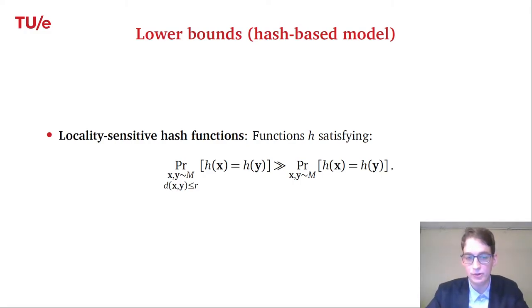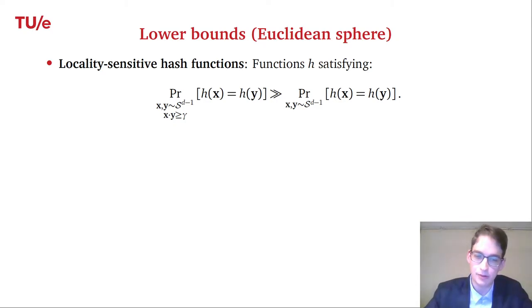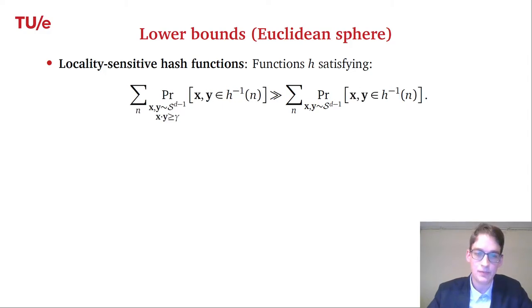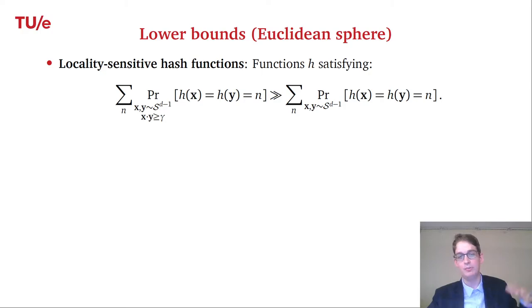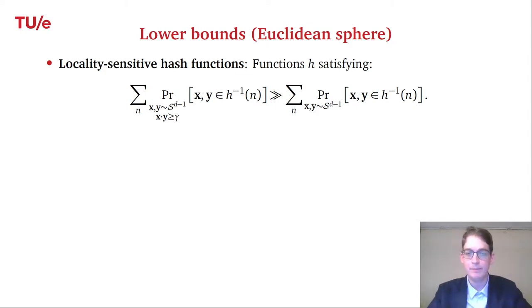Ideally we want hash functions where the gap between the collision probability for nearby vectors and for random vectors is as large as possible. On the unit sphere, closeness of two vectors x and y can be interpreted as their dot product being larger than some parameter gamma, and we can rewrite the collision probabilities as a sum over all hash values n of the probability that both x and y fall into the preimage of n.